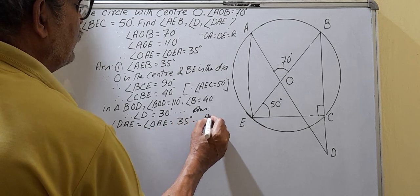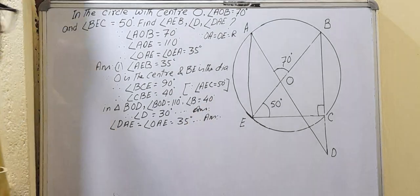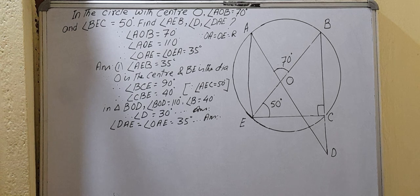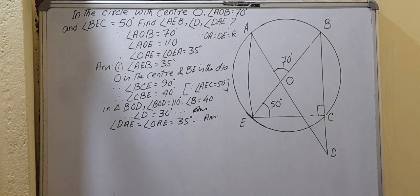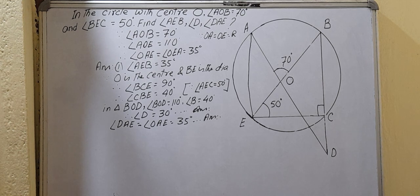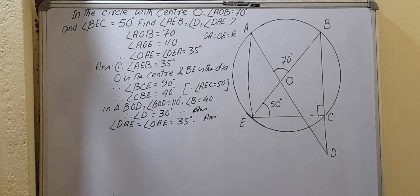To summarize: the sum of interior angles equals 180 degrees, a straight line is 180 degrees, and when two diameter points are joined by lines from a point on the circle, that angle should be 90 degrees. Please subscribe, thank you very much.